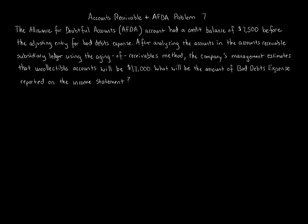Accounts Receivable and AFDA Problem 7. The Allowance for Doubtful Accounts (AFDA) account had a credit balance of $7,500 before the adjusting entry for bad debts expense. After analyzing the accounts in the Accounts Receivable subsidiary ledger using the aging of Accounts Receivable method, the company's management estimates that uncollectible accounts will be $17,000. What will be the amount of bad debts expense reported on the income statement?